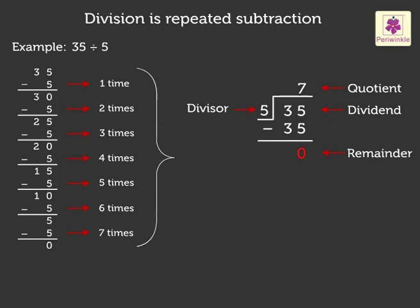The remainder is always smaller than the divisor. Did you notice that the quotient is equal to the number of times we subtracted?